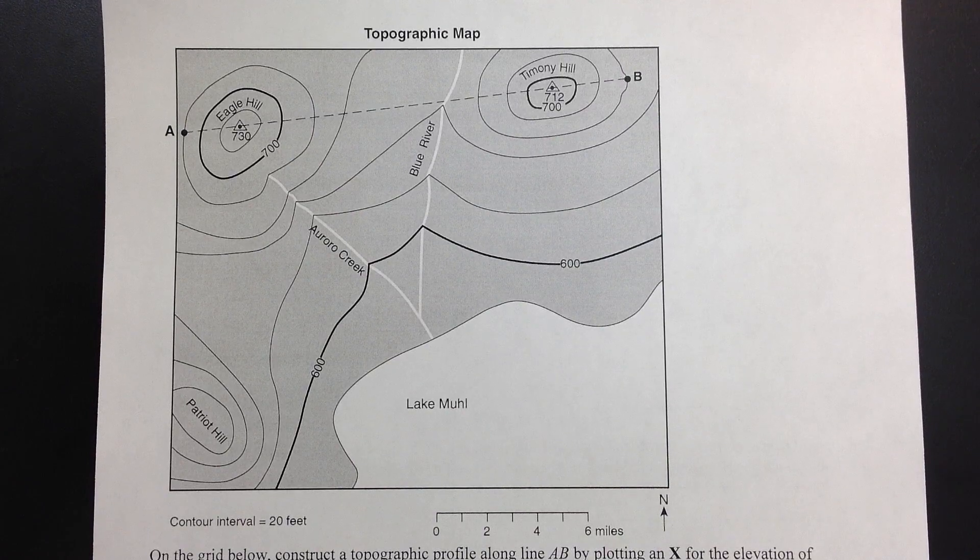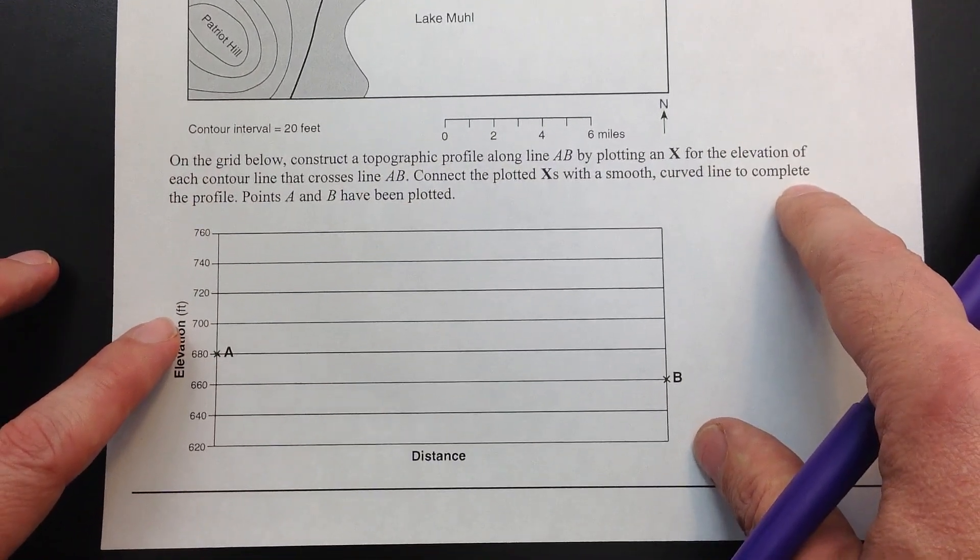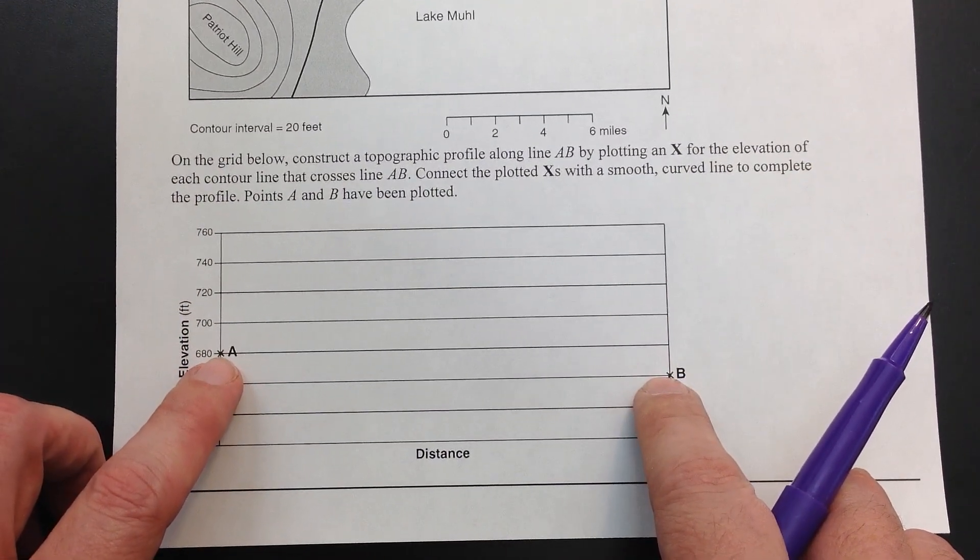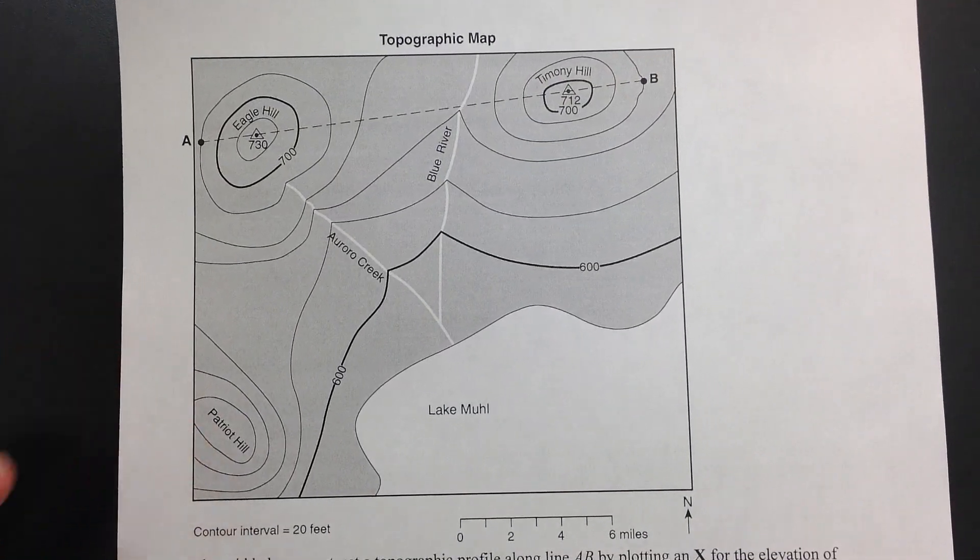Now what we have here is we have our map, and at the bottom of the map we have a grid. And we're going to be making our profile from point A to point B. Let me show you what we're going to do.